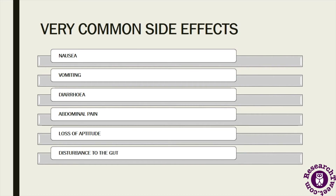Metformin is sometimes used to prevent diabetes in women with polycystic ovarian disease, known as PCOD or PCOS, and the side effects for this use are the same as for other uses.